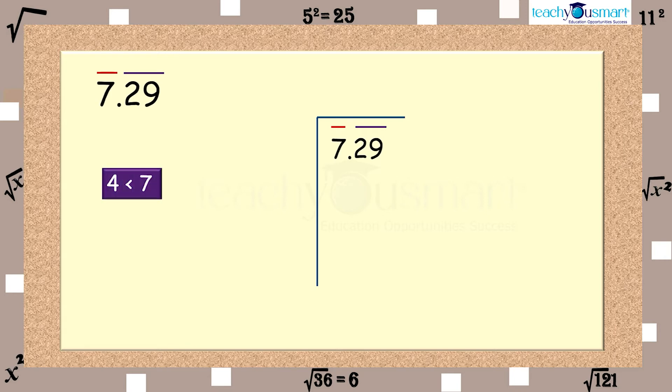Here, 4 is the largest square number less than 7. That is 2 is the largest number whose square is less than 7. Here, 2 is the divisor and quotient. Divide and get the remainder. The remainder is 3 and put down the next bar, that is, 29 to the right of 3, to get 329.